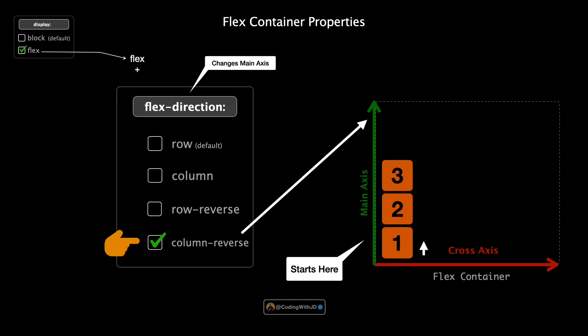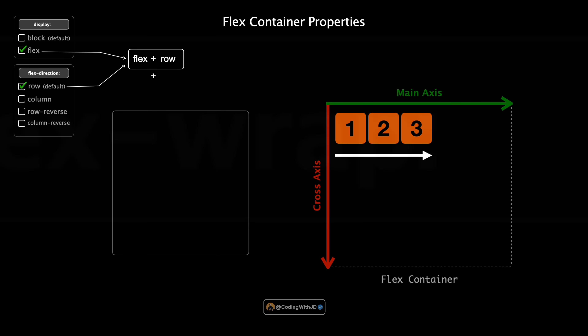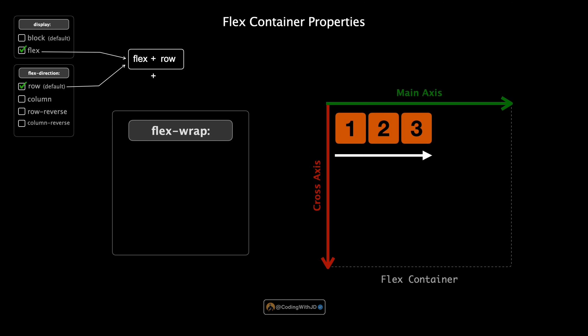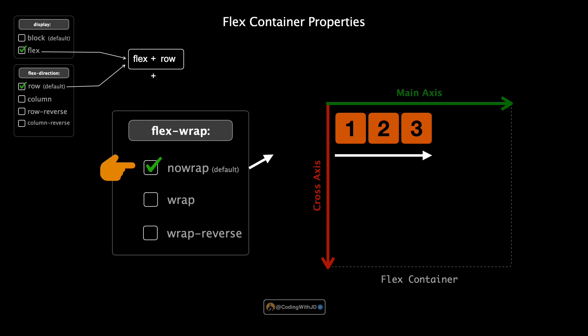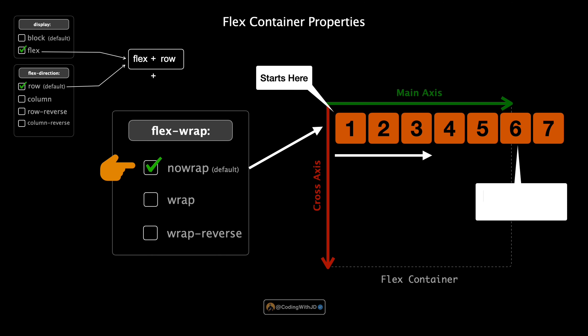The next flexbox property is flex-wrap. This property helps us manage how items behave when they run out of space in the container. It can take three values: no-wrap, wrap, and wrap-reverse. First up, no-wrap — this is the default setting. With no-wrap, all flex items will try to fit on one line no matter what. They might shrink or overflow the container if there isn't enough room, but they won't wrap onto a new line.